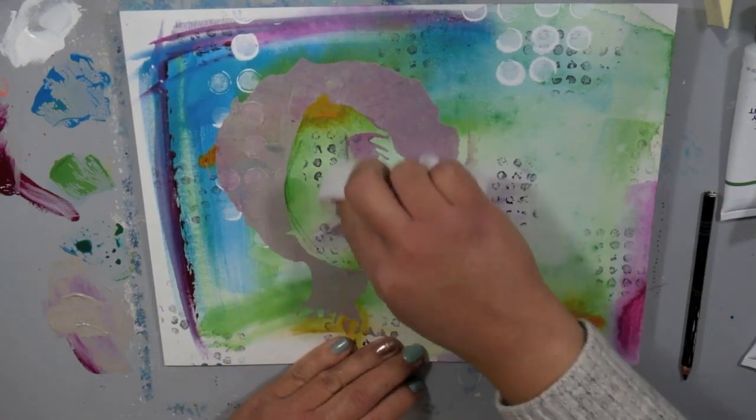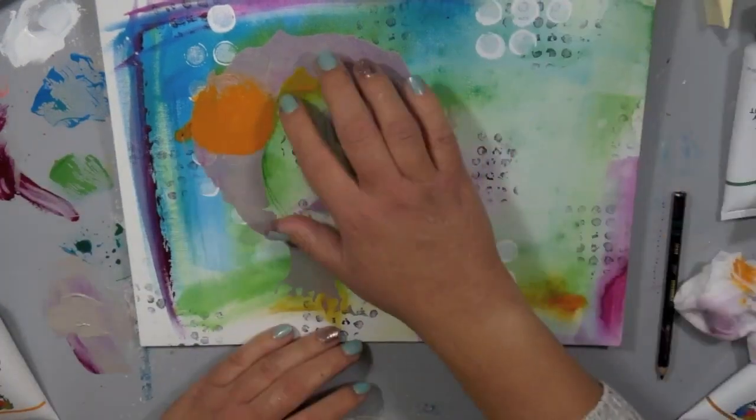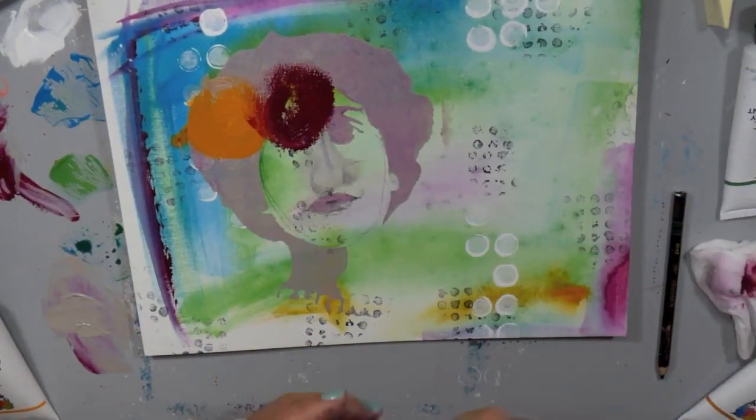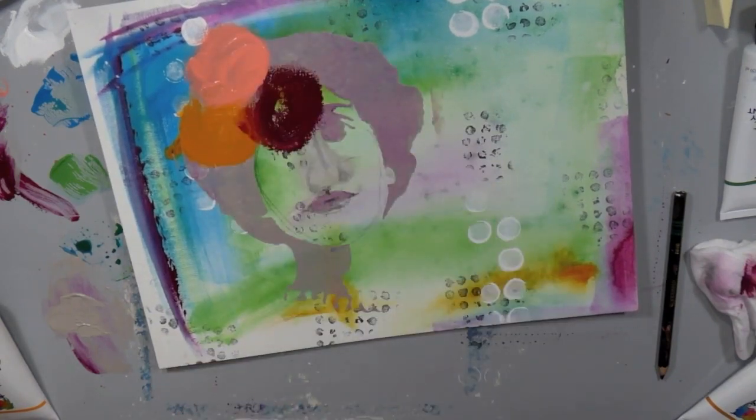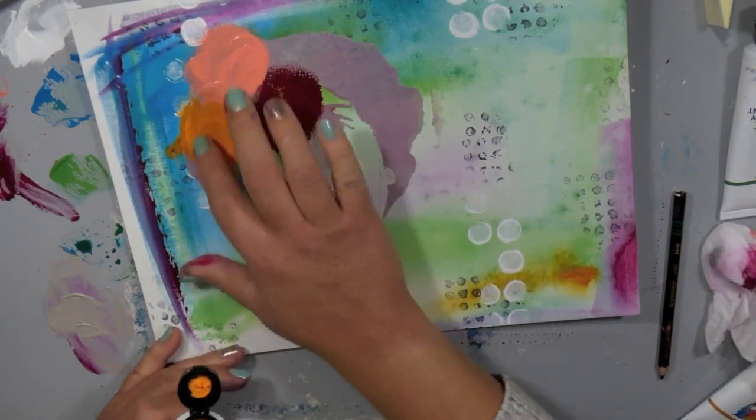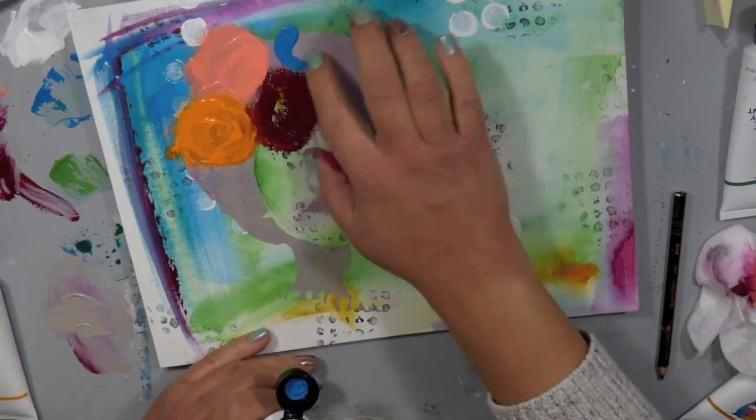I almost completely started over but I thought no let's see what happens when I do the next step because I knew I wanted to add some flowers all around on her hair just to kind of create like this really beautiful crown of flowers. I'm obsessed with creating abstract florals.